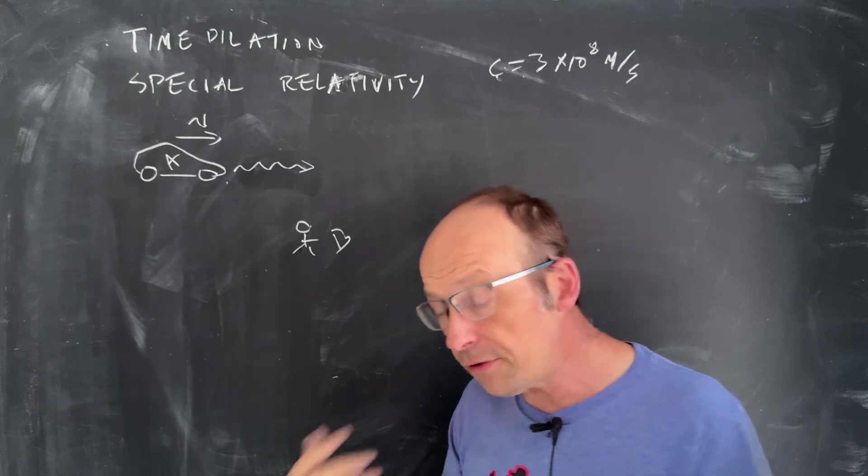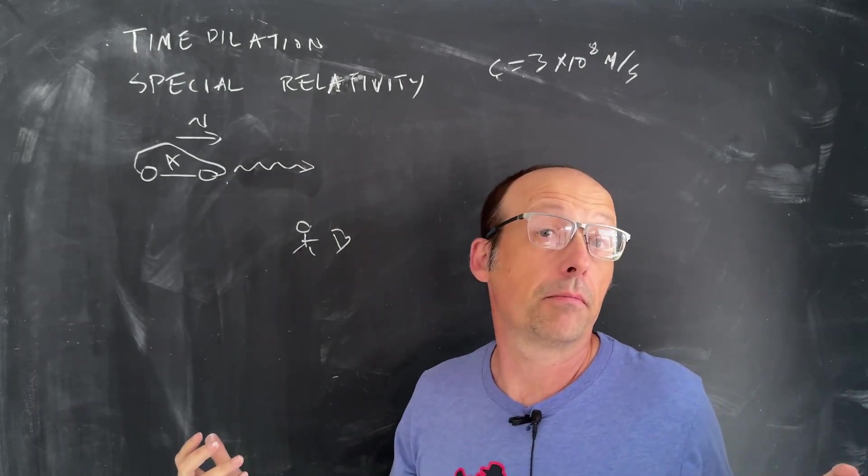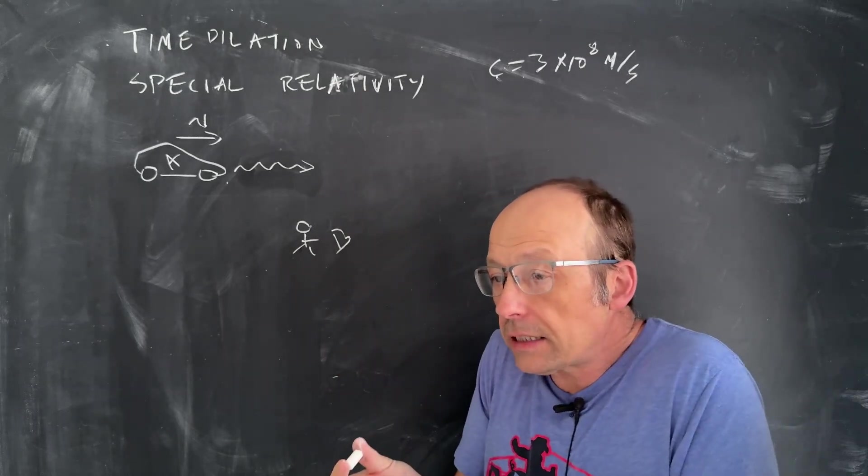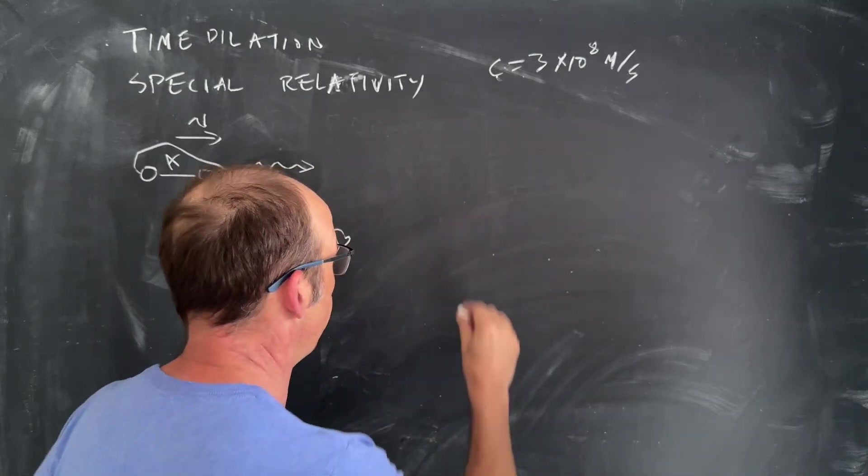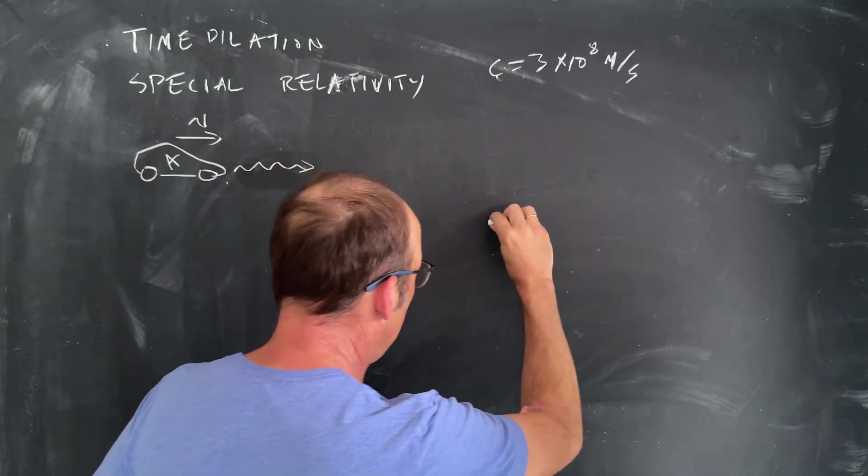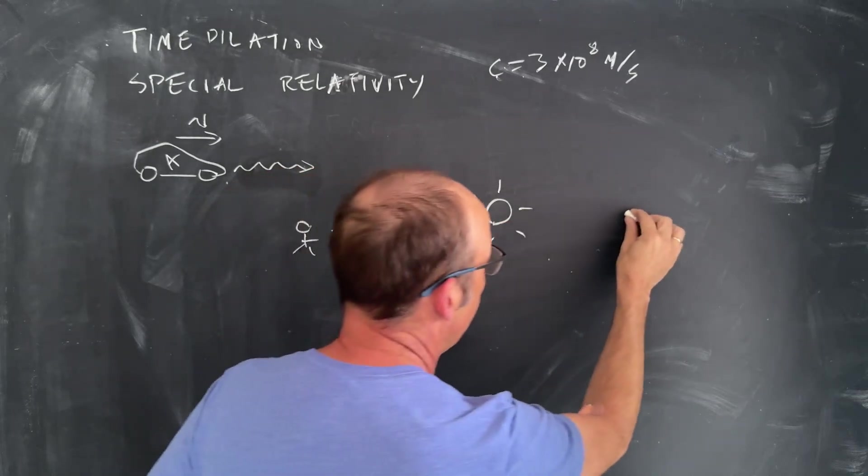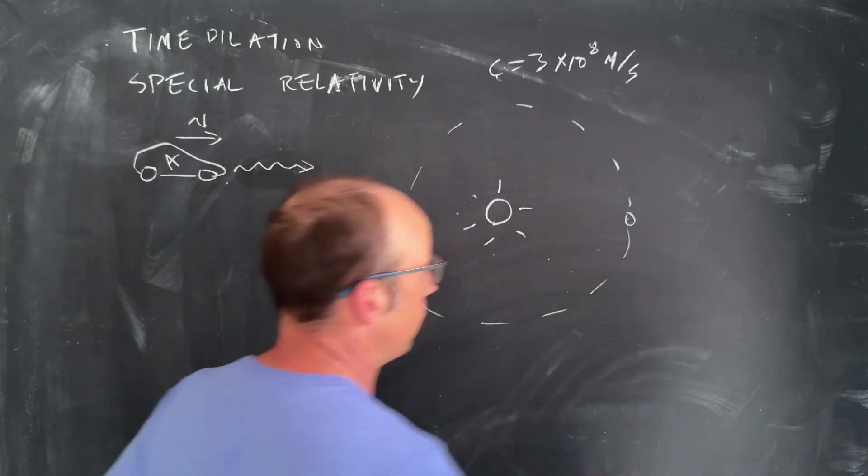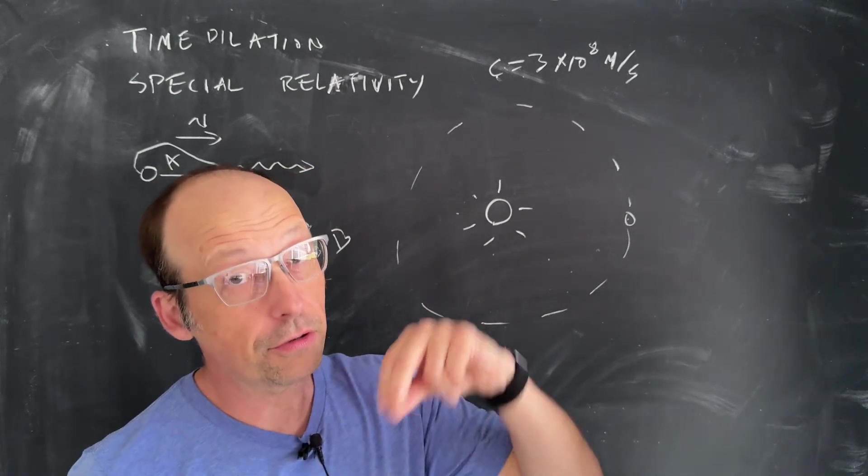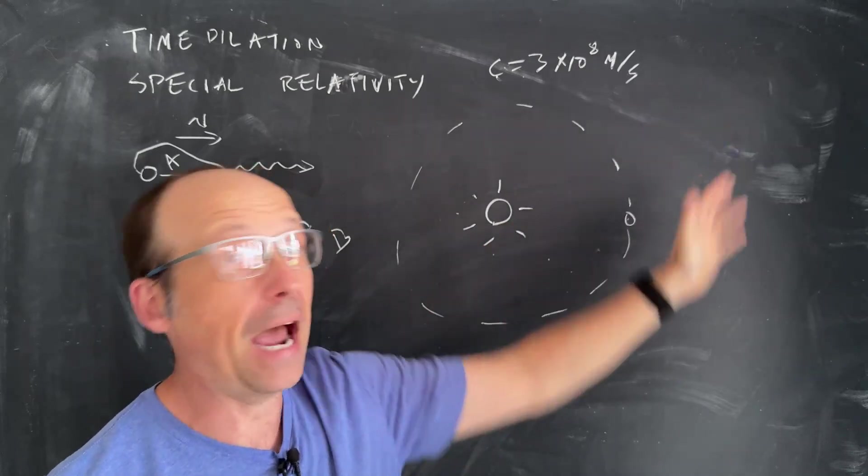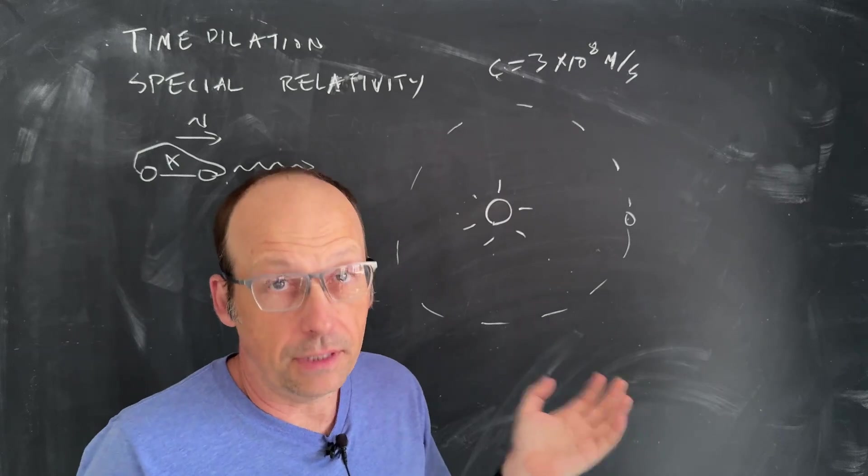This is one of the key ideas in special relativity, that everyone sees the speed of light the same, no matter what their reference frame. But why did Einstein say that? There's really two reasons. The first is the Michelson-Morley experiment. Imagine that you have the sun, and we do, we have the sun. And then we have the earth, and the earth is orbiting the sun.